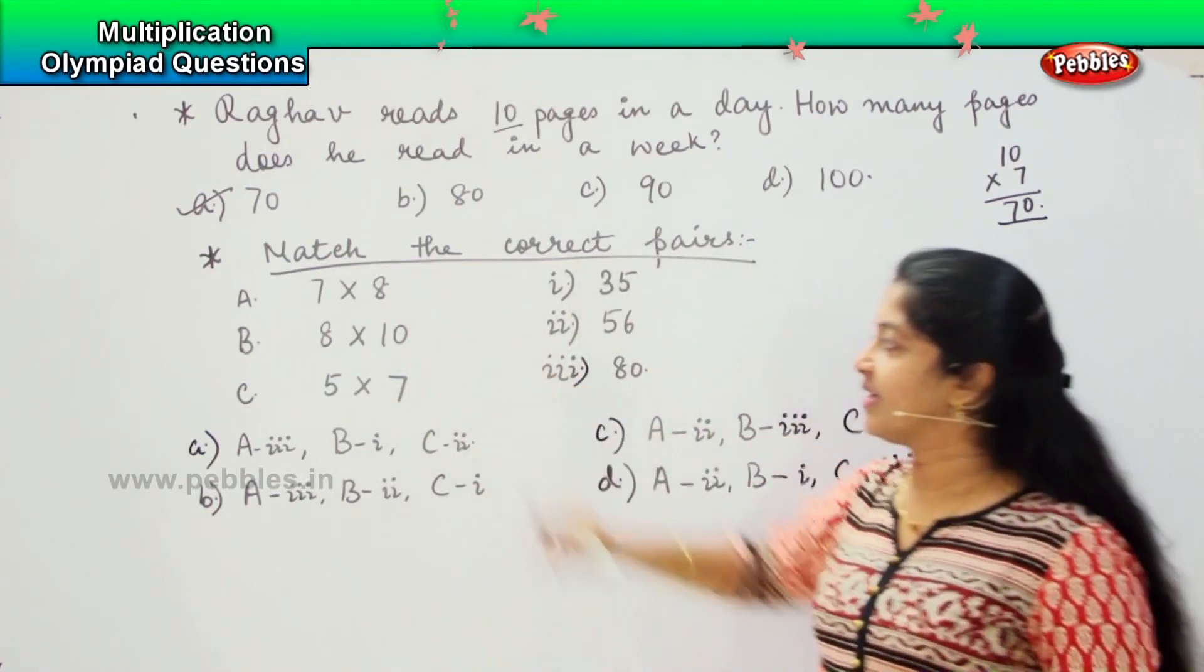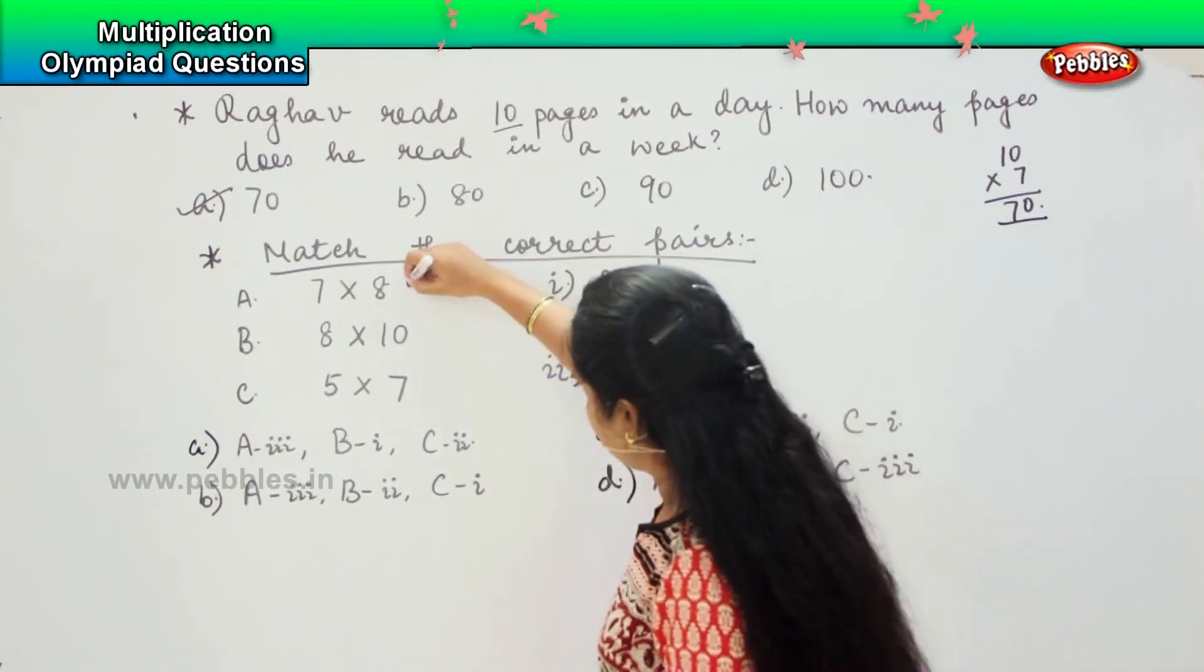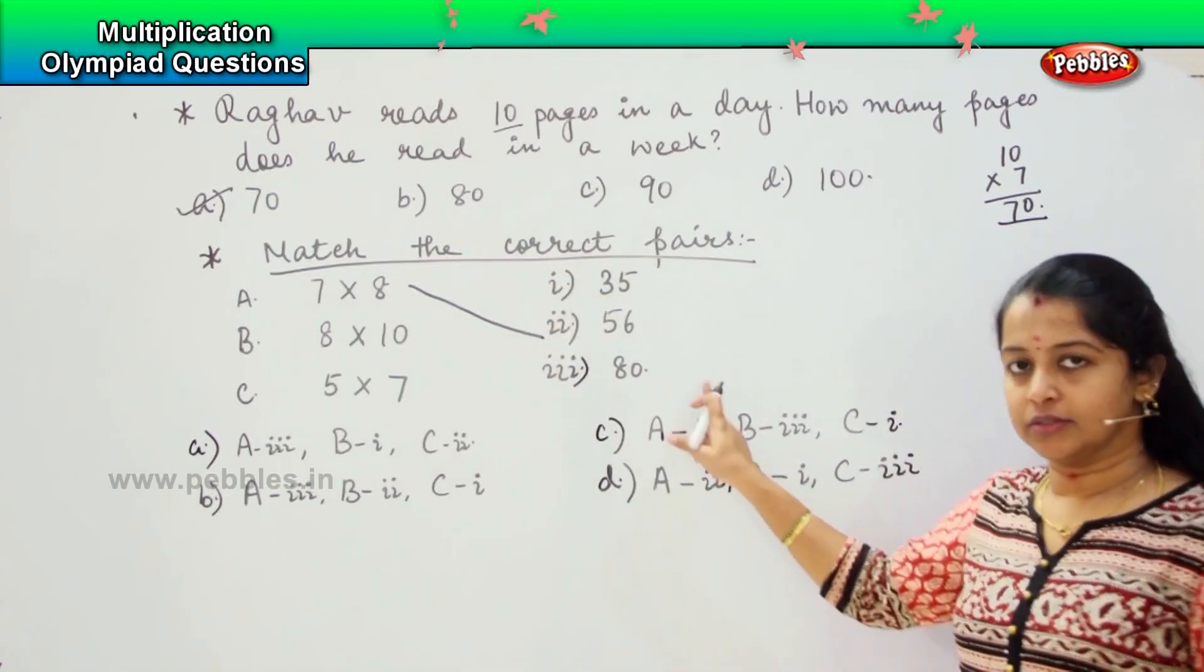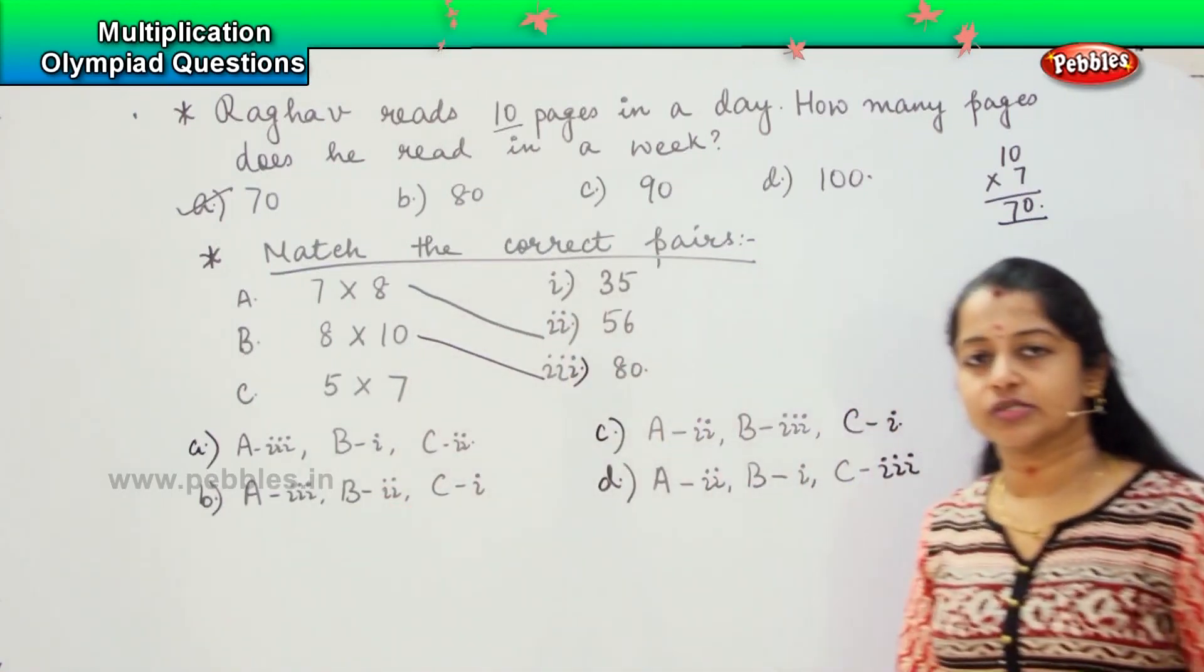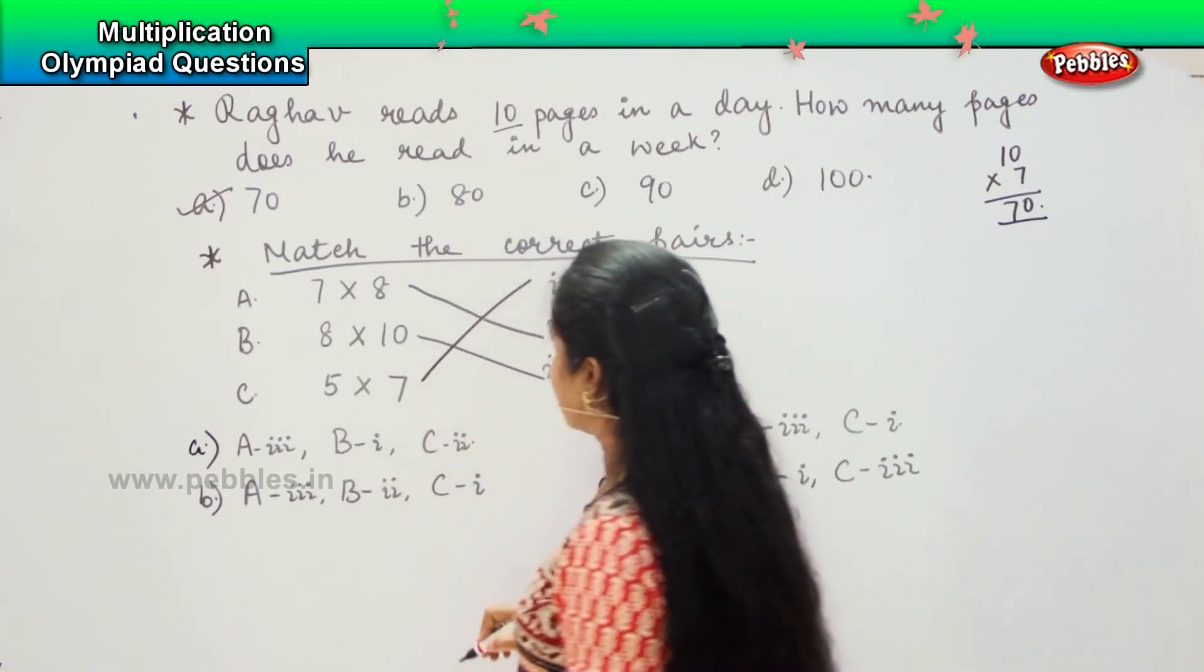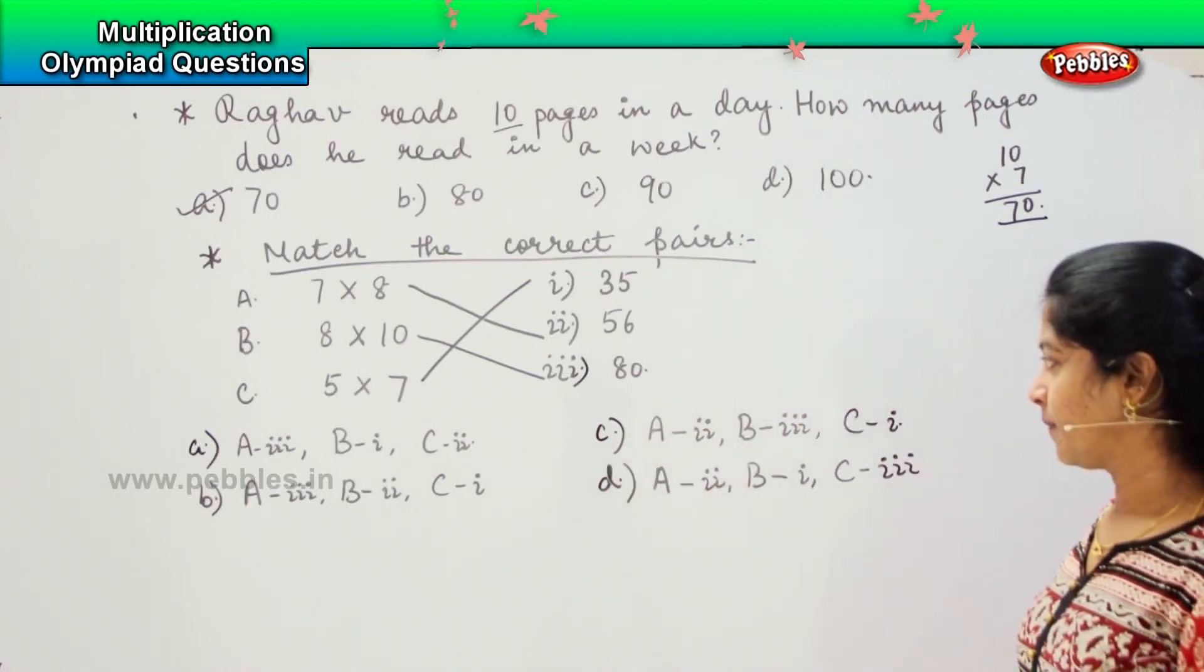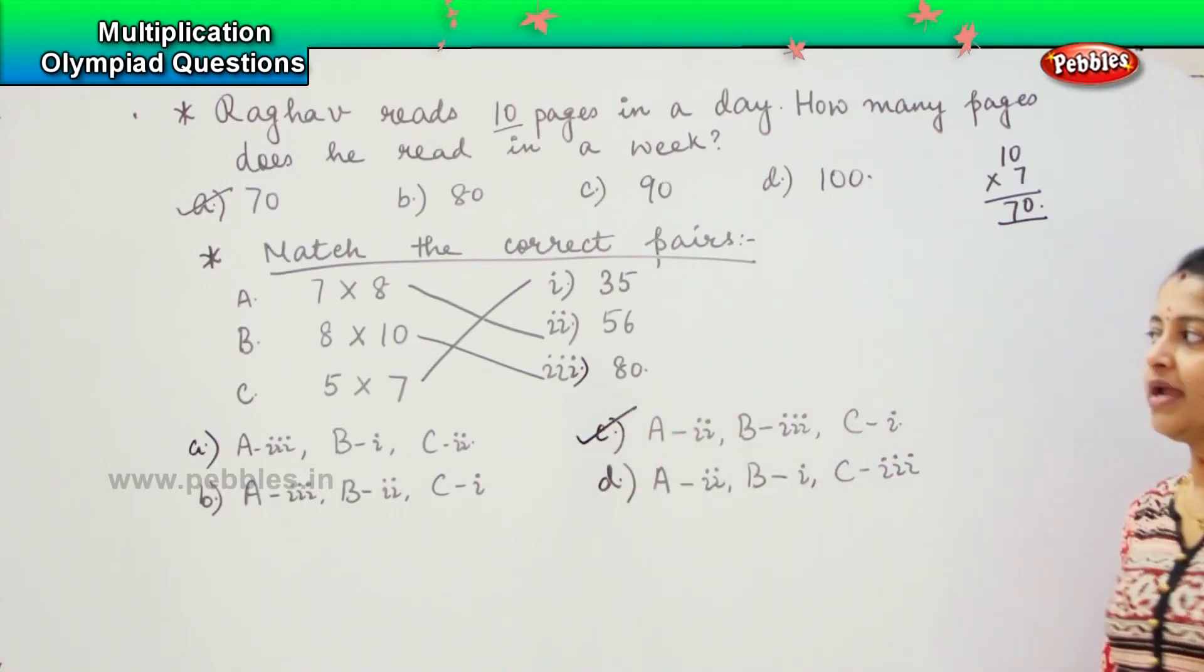The first one says 7 into 8. How much is 7 into 8? 56. And what is 5 into 7? 5 sevens are? Good, it is 35. So my answer should be A-2, B-3, and C-1, which means option C is my right answer. Clear?